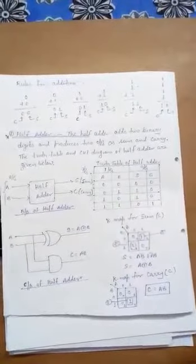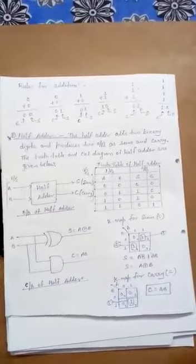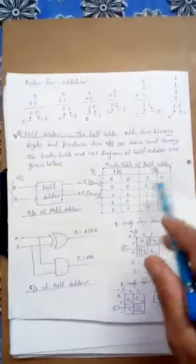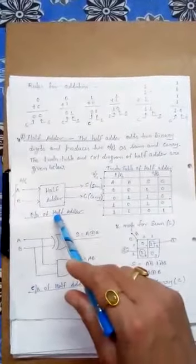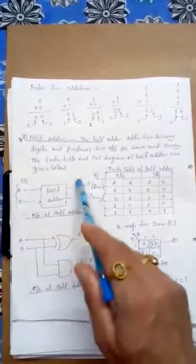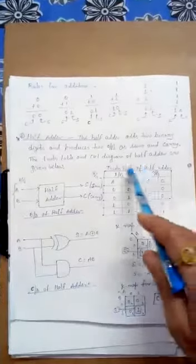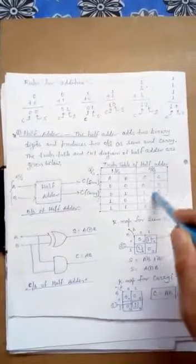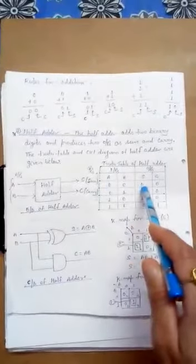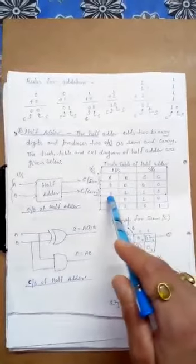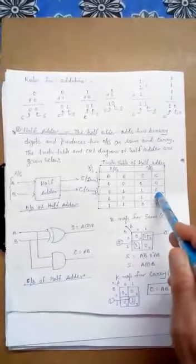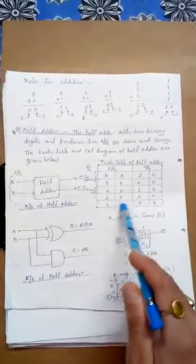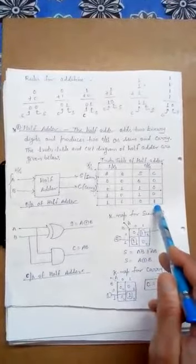First is half adder. The half adder adds two binary digits and produces two outputs as sum and carry. The block diagram, truth table, and circuit diagram of half adders are given below. This is the block diagram of half adder — these are two inputs and these are two outputs. This is the truth table of half adder. A and B are two inputs and S and C are two outputs for sum and carry. 0+0 gives sum 0 carry 0; 0+1 gives sum 1 carry 0; 1+0 gives sum 1 carry 0; 1+1 gives sum 0 carry 1.